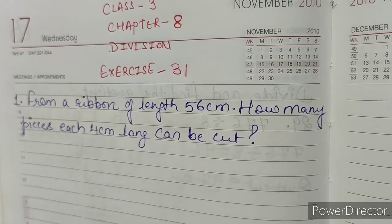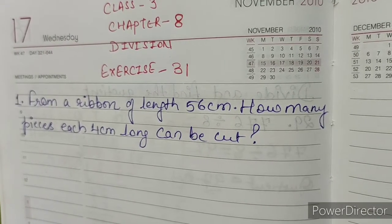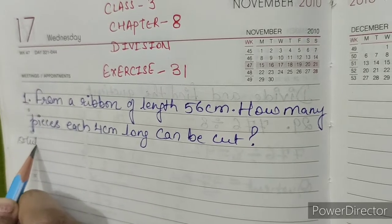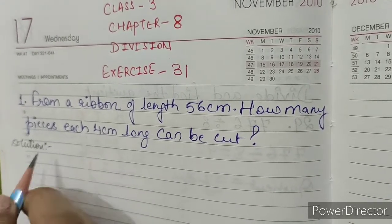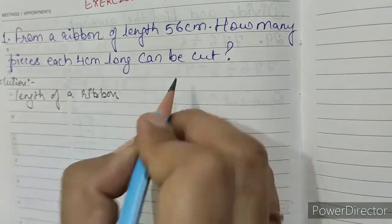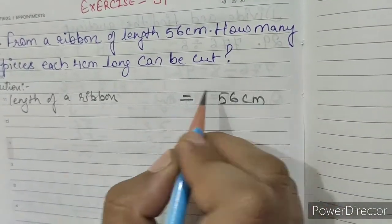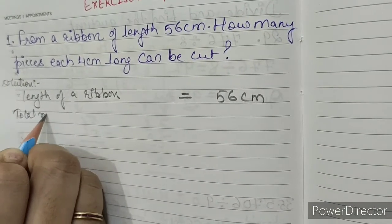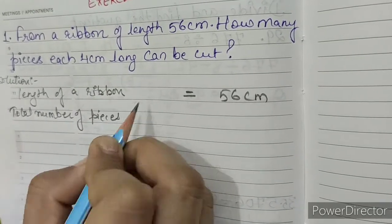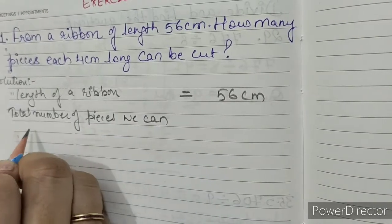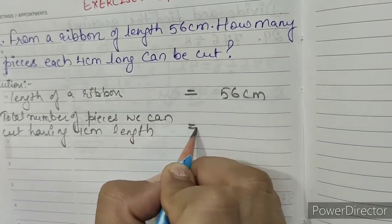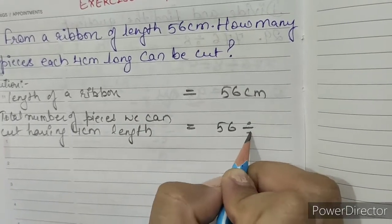Question number 1. From a ribbon of length 56 cm, how many pieces each 4 cm long can be cut? Solution. Length of a ribbon equals 56 cm. Total number of pieces we can cut having 4 cm length equals 56 divided by 4.